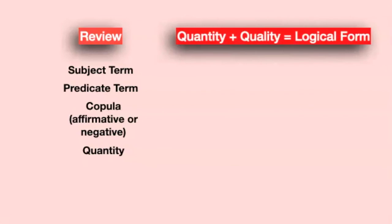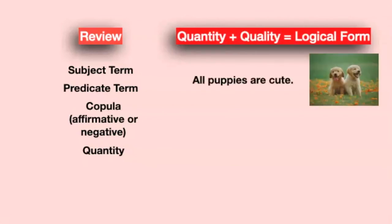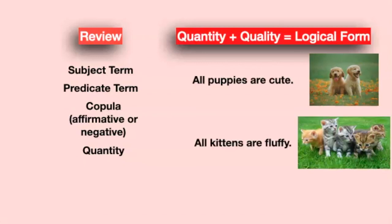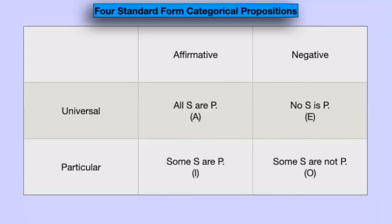Now let's review. A categorical proposition has four parts: the subject term, the predicate term, the copula (which can be either affirmative or negative), and one or more words indicating quantity. Together, the quantity and the quality make up the logical form of the proposition. The two statements 'all puppies are cute' and 'all kitties are fluffy' have the same logical form because they're both universal affirmative, but the content is different. There are two possible qualities and two possible quantities, and we can put them together to get four standard form categorical propositions.